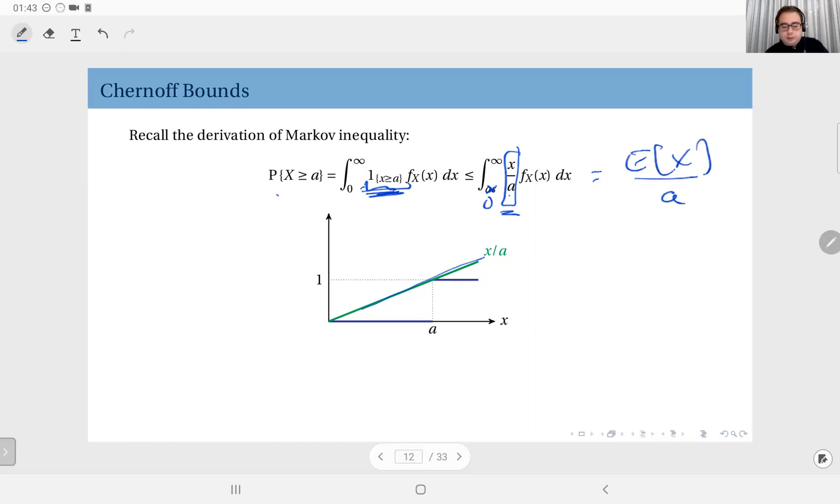So now, here, we will make a further observation that instead of X divided by A, we can use other functions that satisfy this. Essentially, if you can find any function that will stay above the indicator function, you can find another bound.